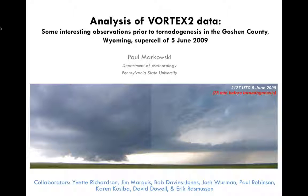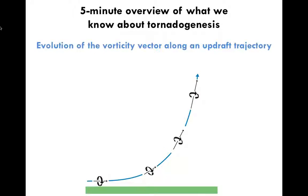I'm going to share with you some highlights of my analysis of the Vortex-2 storm that was intercepted on June 5, 2009 in Goshen County, Wyoming. I don't think I'm being overly hyperbolic in saying that this is likely the best observed tornadic supercell in history. And it's work that kept me busy for much of 2010, 11, and 12. So I'm going to start with a quick overview of what we know about tornado genesis in supercell storms.